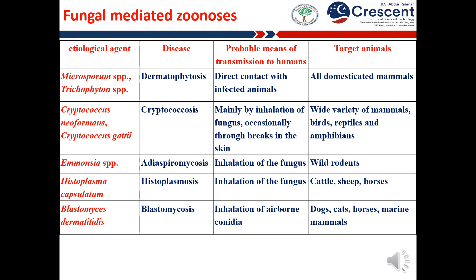Histoplasmosis is caused by Histoplasma in humans through inhalation of fungal spores, and also infects cattle, sheep and horses. Blastomycosis is caused by inhalation of fungal conidia and can also infect dogs, cats, horses and marine mammals.